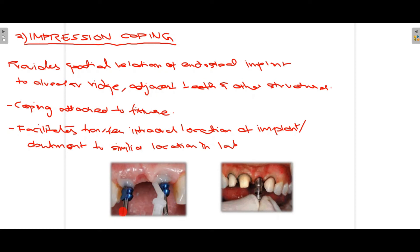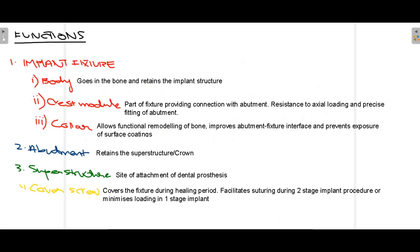Summarizing the functions of all components: the implant fixture body goes into the bone and retains the implant structure. The crest module provides connection with the abutment, resistance to axial loading, and precise fitting of the abutment. The collar allows functional remodeling of bone, improves the abutment-fixture interface, and prevents exposure of the surface coating. The abutment retains the superstructure. The superstructure is visible in the oral cavity and provides the site of attachment for the dental prosthesis.